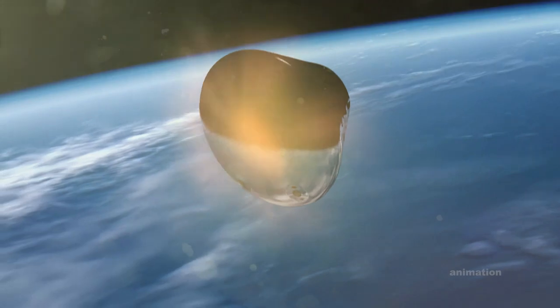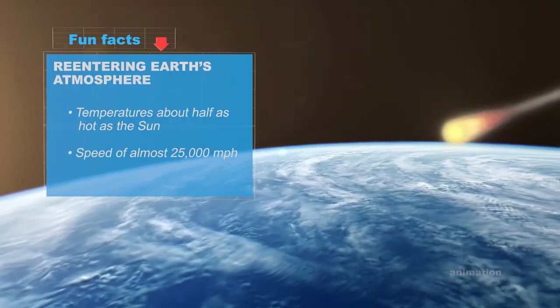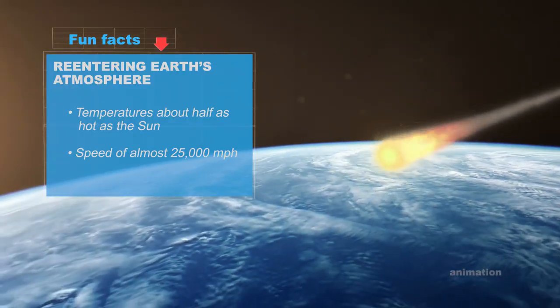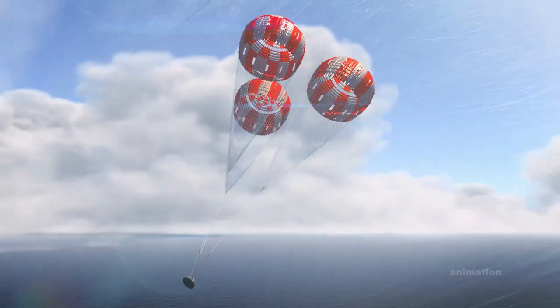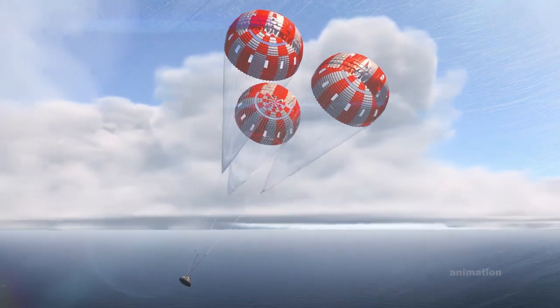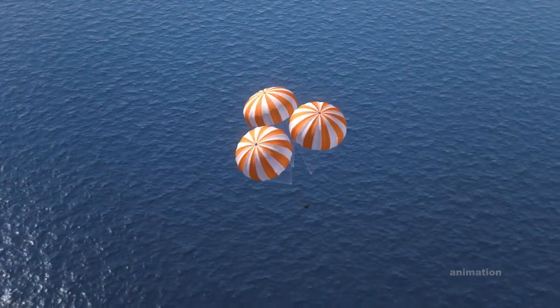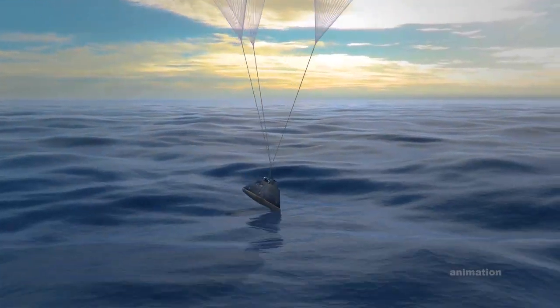Orion returns to the planet traveling 25,000 miles per hour, enduring temperatures nearly 5,000 degrees Fahrenheit. A series of parachutes deploy to bring its speed down to close to 20 miles per hour so it can safely splash down into the Pacific Ocean.